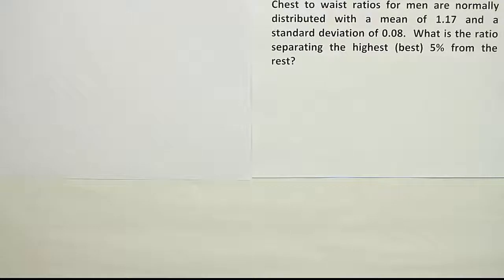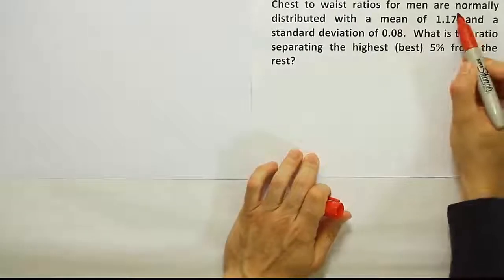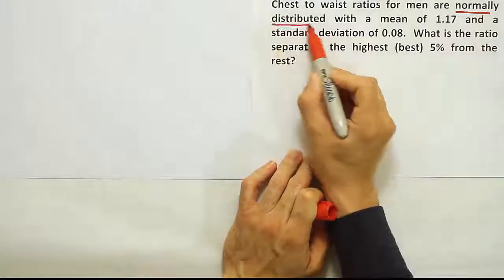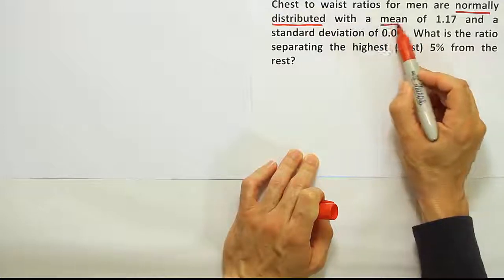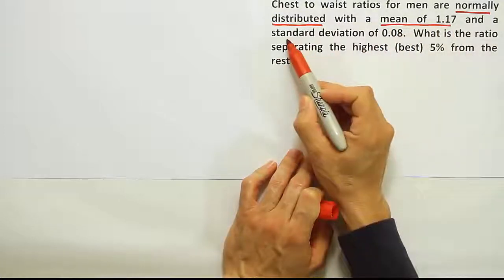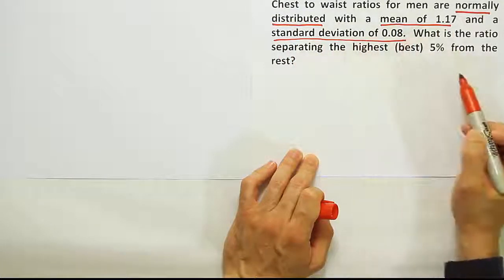Okay, so before I start, I want to identify some key phrases here. Normally distributed tells me I should use the bell curve. I'm given that the mean is 1.17 and that the standard deviation is 0.08.